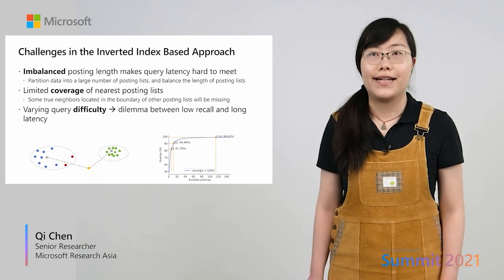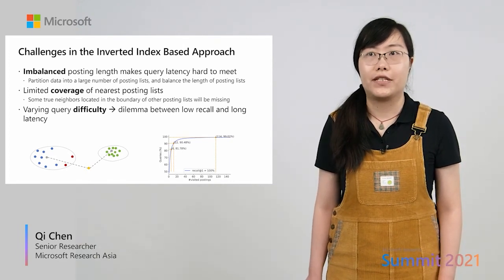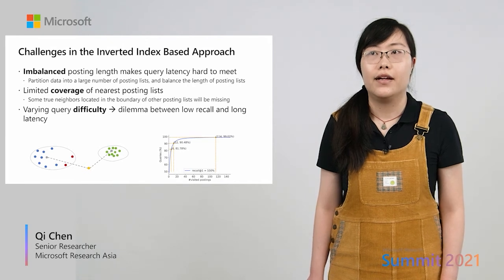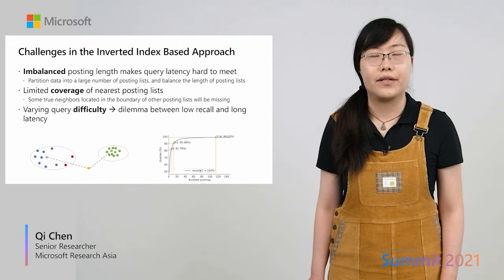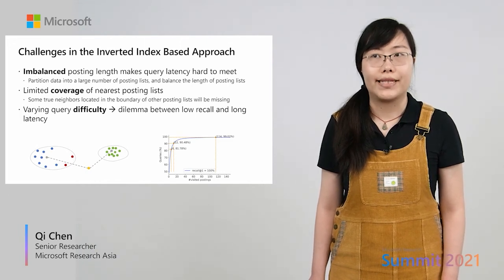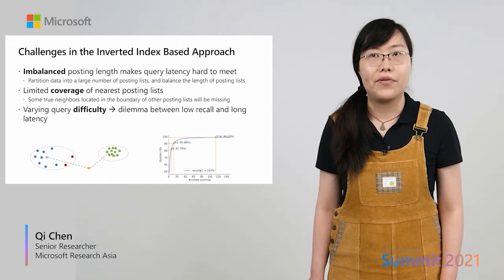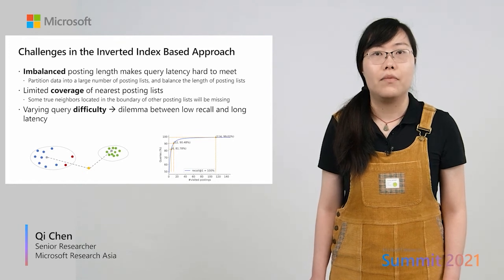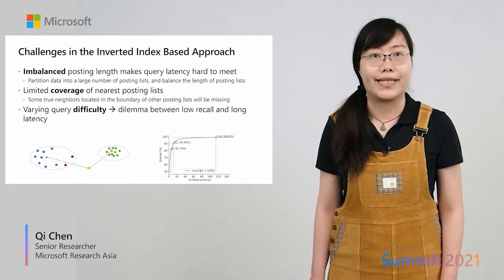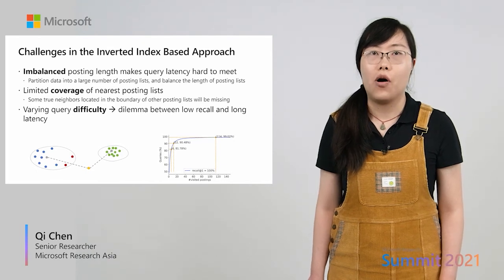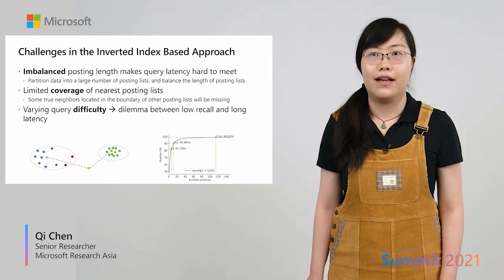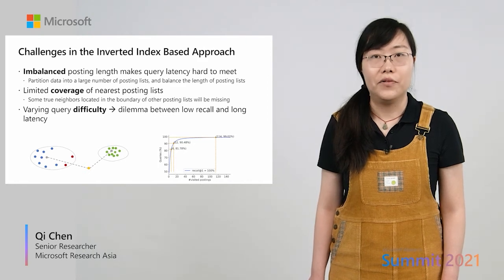Moreover, we find that different queries may have different search difficulties. As shown in the figure, more than 80% of queries only need to search about six posting lists, while some queries require searching more than 100 posting lists. If we search the same number of posting lists for all queries, it will result in low recall or long latency.